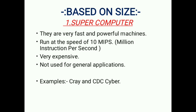Now we have to discuss about based on size. The first one is supercomputer. Supercomputers are very fast and powerful machines. Supercomputers run at the speed of 10 MIPS, means 10 million instructions per second. Supercomputers are very expensive and they are not used for general applications. They are only used for scientific purposes. Examples of supercomputers are Cray and CDC Cyber.